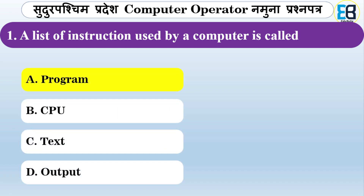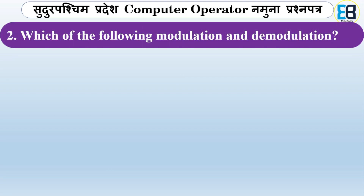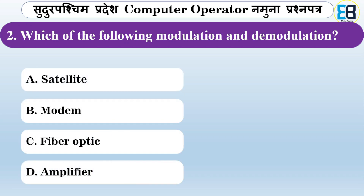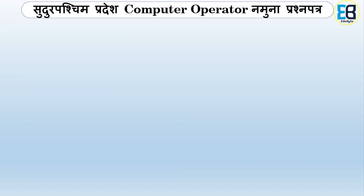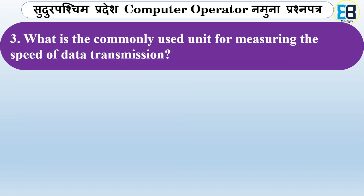Next question: a list of the system is called what — involving modulation and demodulation over satellite medium, fiber optic, or amplifier? The correct option is medium — modulation and demodulation.